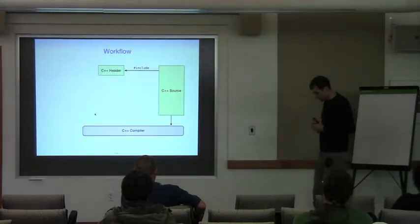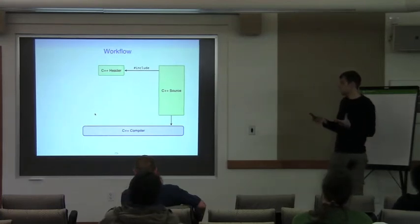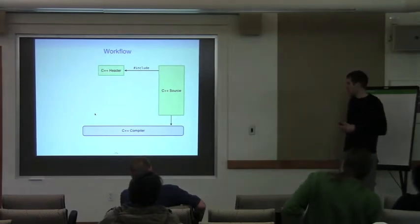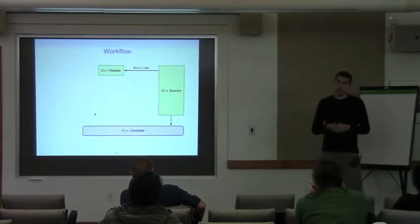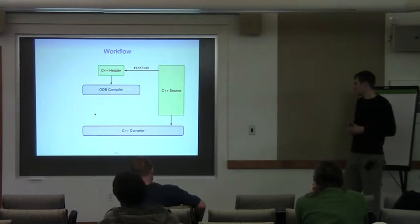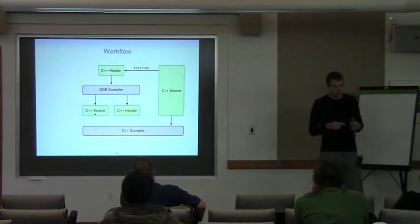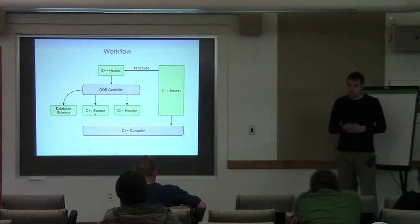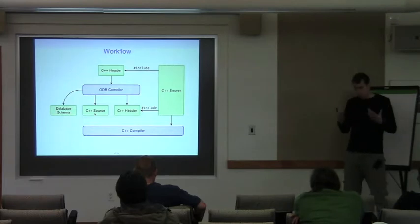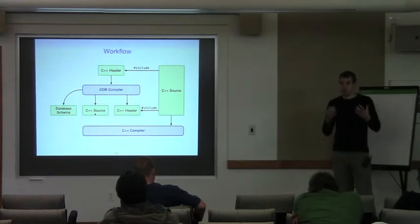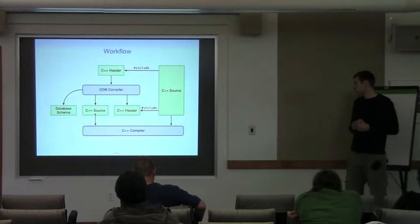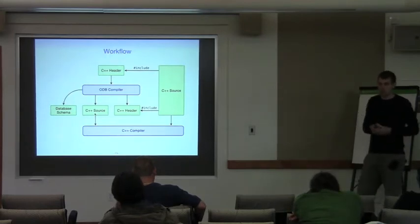Back to the build workflow. Here's a typical simple C++ application: a header file and a source file which includes the header. The source file is compiled with a C++ compiler to an executable. Once we start using ODB, some headers are compiled with the ODB compiler. The output of the ODB compiler is a set of C++ source and header files. We can also ask the ODB compiler to generate the database schema for our persistent classes. The application source code includes the generated header file to gain access to the database conversion code.